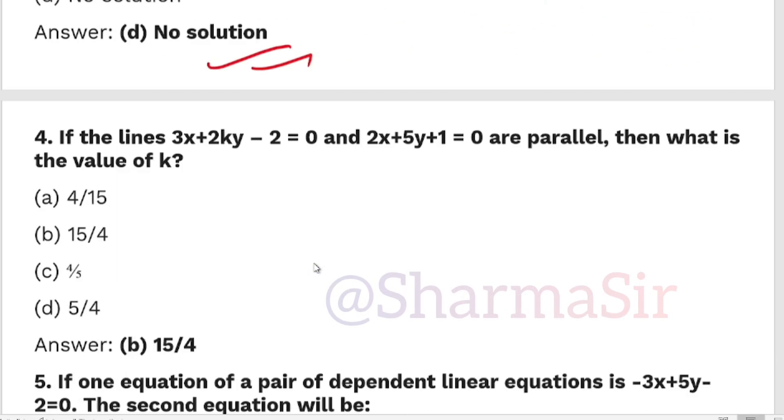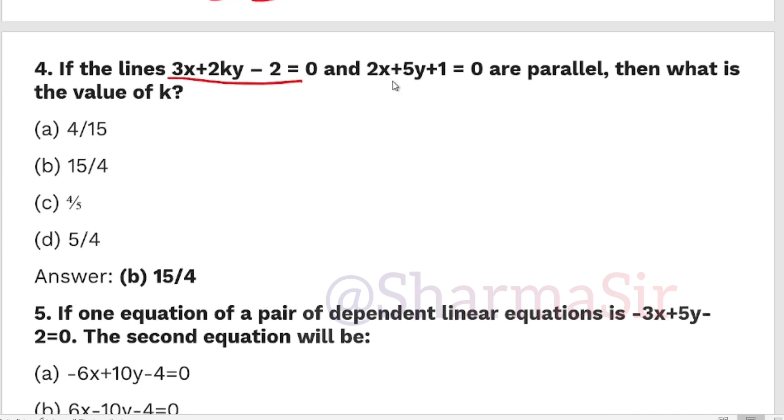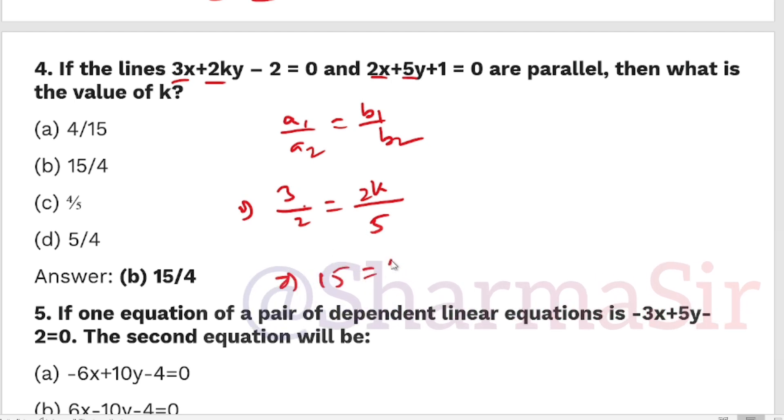Next question. If the lines 3x+2ky-2=0 and 2x+5y+1=0 are parallel, then what is the value of k? So a1/a2 equal to b1/b2: 3/2 = 2k/5. Cross-multiplication gives 15=4k, so k equals 15/4. So 15 by 4 is the correct answer.